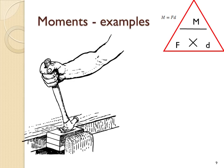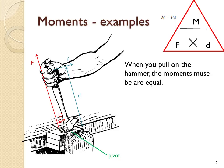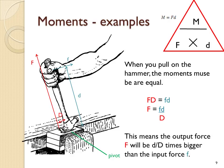Here's an example of using moments: a nail being removed from wood using a claw hammer. The claw hammer pivots about its base. The person's hand applies a force at a large distance from the pivot, shown in blue, while a small perpendicular distance from the pivot, a force is applied to the nail. When you pull on the hammer, the moments must be equal and balance: force times distance in red equals force times distance in blue. This means the output force equals force times the small distance divided by the large distance, making the output force proportionally larger than the input force. This device is a force-amplifying machine.